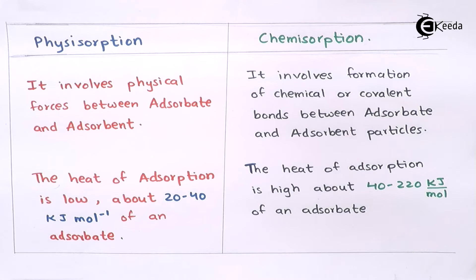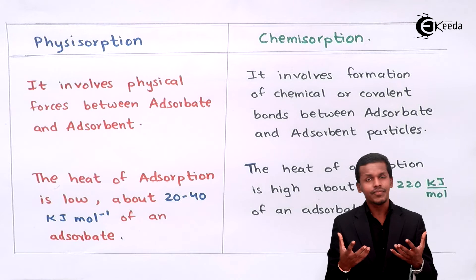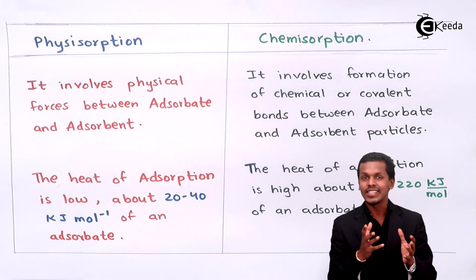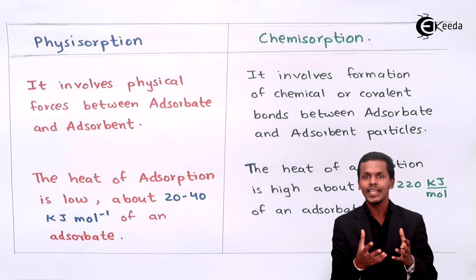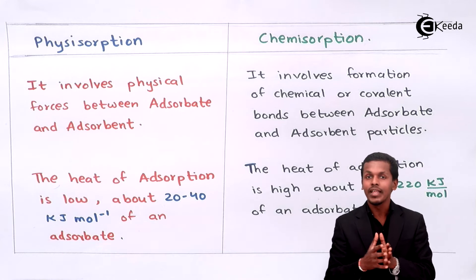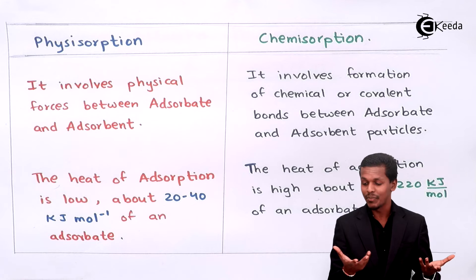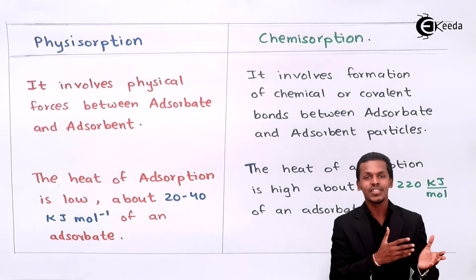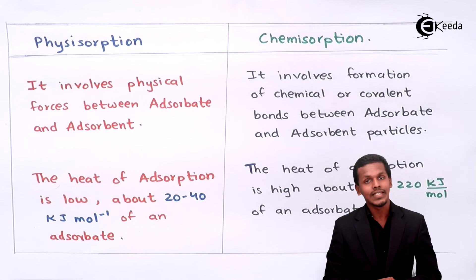For chemical adsorption, the heat of adsorption is higher, ranging from 40 to 220 kJ per mole of adsorbate. Because chemisorption forms a very strong covalent bond between the adsorbate and adsorbent, the strong force of attraction causes the adsorbate to release more energy when deposited. This is relatively high compared to physisorption.